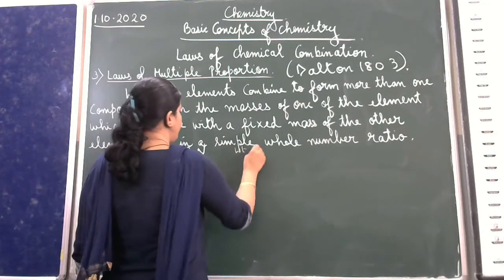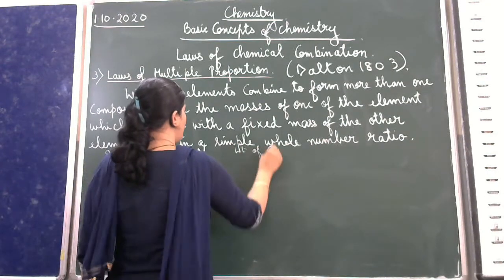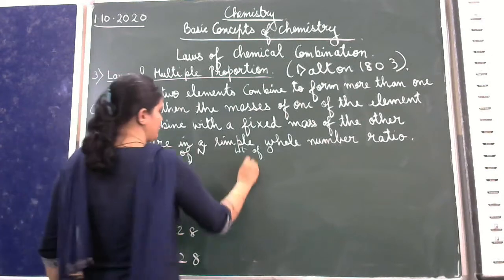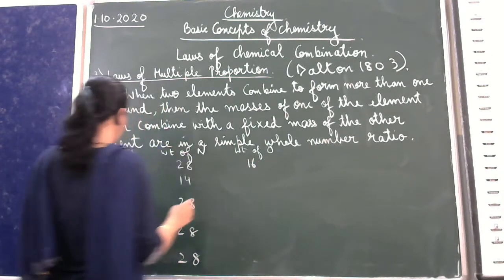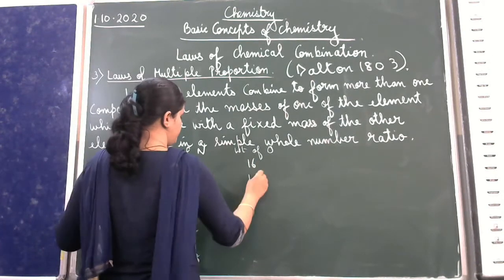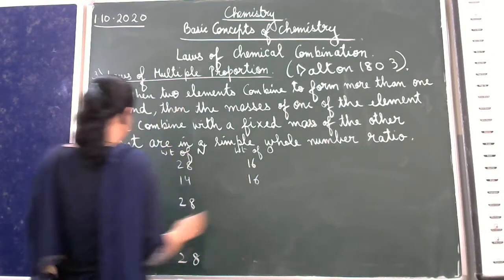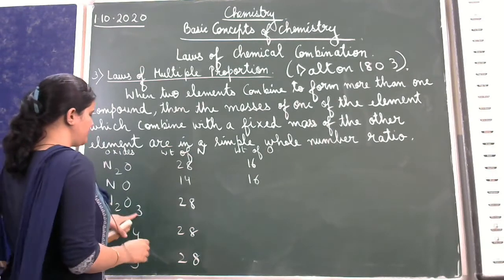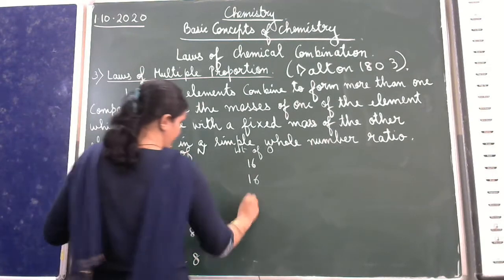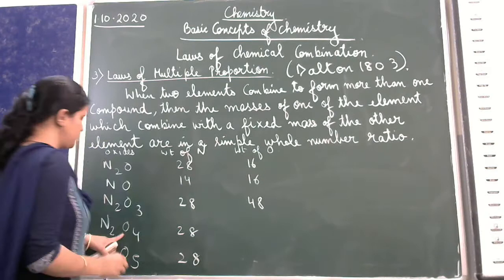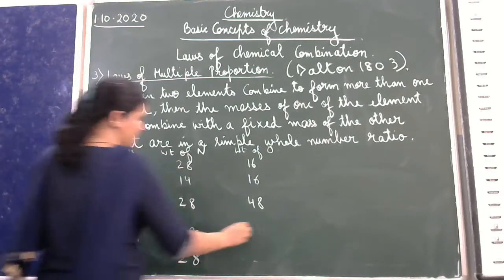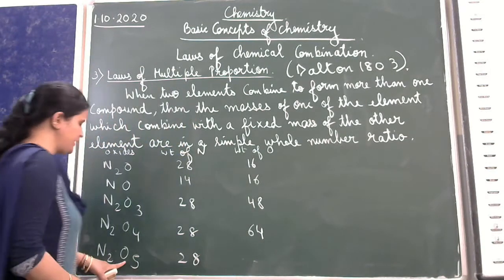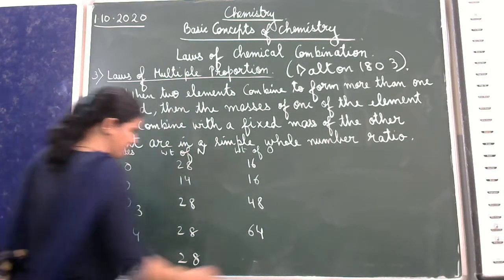Now we write the weight of oxygen in each compound. In N₂O, oxygen is 16. In NO... again 16. In N₂O₃, oxygen is 48. In N₂O₄, oxygen is 64. And in N₂O₅, oxygen is 80.